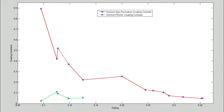For the electron-phonon coupling constant, we observe a pronounced peak at optimal doping, where the superconducting transition temperature reaches a maximum.